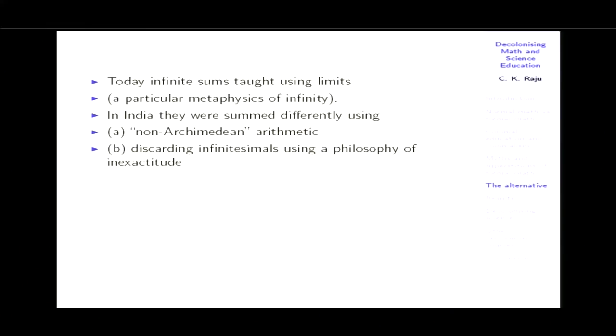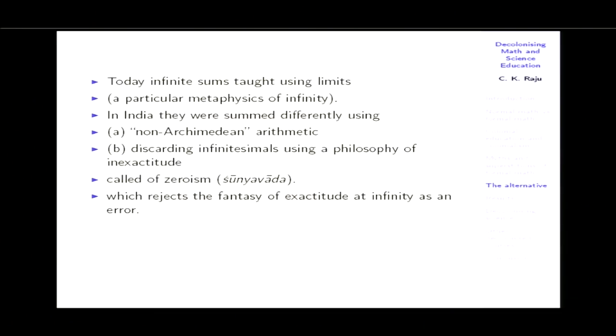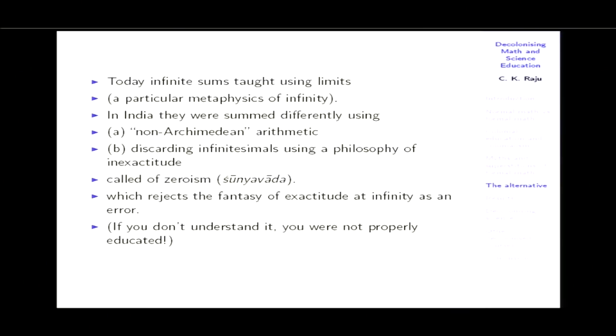There was a philosophy of discarding infinitesimals of small numbers right from the time of the first texts, like the Shulva Sutra — they call √2 'savishesha': you cannot get an exact value, there will always be a remainder. This discarding of infinitesimals uses a philosophy of inexactitude called zeroism, or Shunyavad. Shunyavad rejects the fantasy of exactitude at infinity as an error. The word 'algebra' comes from Al-Jabr wal-Muqabala of Al-Khwarizmi of Baghdad, who took the work of Brahmagupta and translated it. Brahmagupta called polynomials such as 2x + 3 'unexpressed numbers' — they require a value only when you give a value to x.